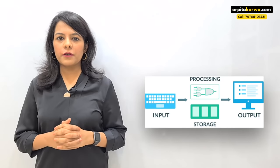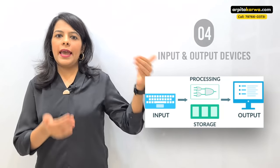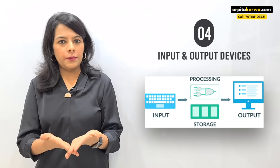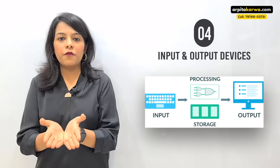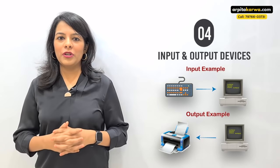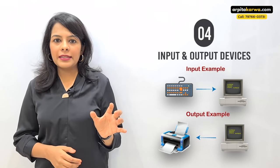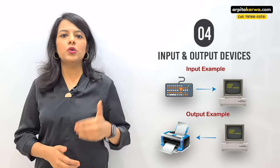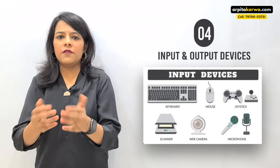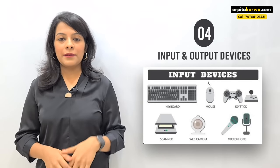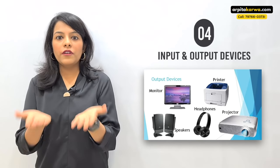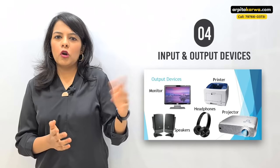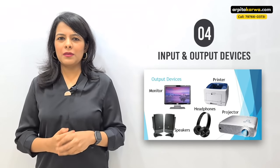Now let's move on to the next topic. Going back to the definition of a computer — a computer accepts raw information as input and presents processed information as output. Input devices are devices used to feed information into the computer, for example a mouse or keyboard. Output devices are devices that display the processed data — for example, a printer or monitor.